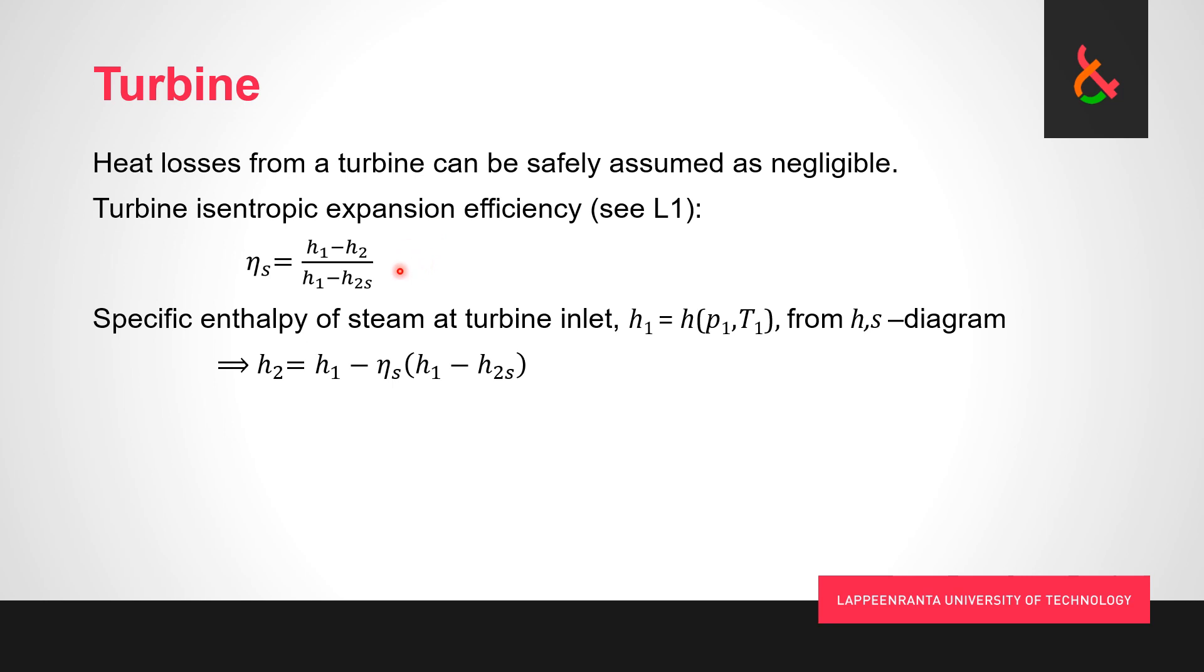What is here, the divider, h_1 minus h_2s, is how much theoretically under the second law would be available if we had a perfect, completely lossless turbine—isentropic, so no entropy change, basically a reversible process. Now we solve for h_2, and we get h_1 minus η_t times (h_1 - h_2s).